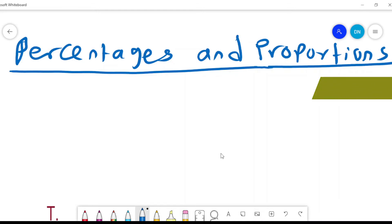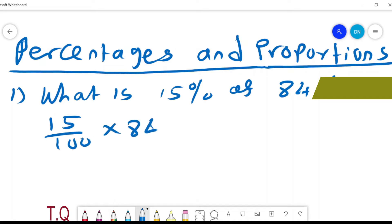Welcome. We want to consider percentages and proportions. For our first example, the question is: what is 15% of 84? We get 15% of 84, and if we divide through by 100, it will be 1.5 times 8.4.